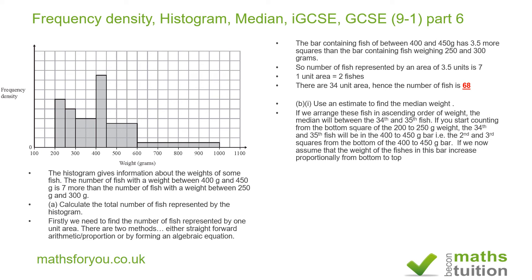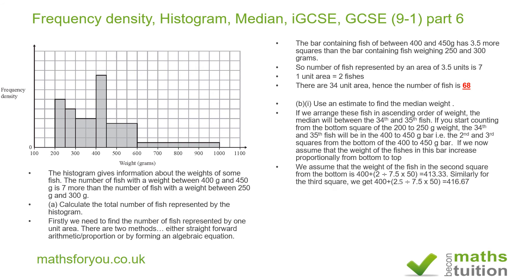Because the 34th fish will be two units in, we calculate: 400 plus (2 divided by 7.5) multiplied by 50, where 50 is the width of this column. That gives a weight of 413.33 grams for the 34th fish.